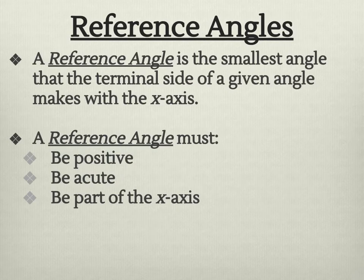Reference angles. A reference angle is the smallest angle that the terminal side of a given angle makes with the x-axis. It's a big mouthful. Things to keep in mind that a reference angle must be positive. It must be acute, so less than 90. And it must be part of the x-axis. It could be the ray to the right on the positive, or it could be a ray on the left with a negative.